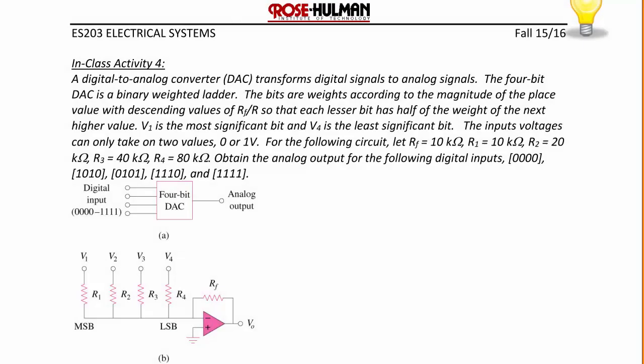A digital-to-analog converter transforms digital signals to analog signals. The 4-bit digital-to-analog converter is a binary weighted ladder. The bits are weighted according to the magnitude of the place value with descending values of R_F or R, so that each lesser bit has half the weight of the next higher value. V1 is the most significant bit and V4 is the least significant bit. The input voltages can only take on two values: 0 or 1 volt. For this circuit, R_F equals 10 kilohms, R1 equals 10 kilohms, R2 equals 20 kilohms, R3 equals 40 kilohms, and R4 equals 80 kilohms. Find the analog output for the given digital inputs.